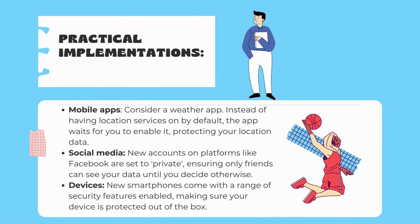Practical implementations: for example, a mobile app might implement privacy by default by setting location tracking to off, requiring users to actively turn it on if they wish to use that feature. A social media platform implements privacy by default by setting users' profiles to private by default, so that only approved connections can see their posts and personal information. Users have to actively change their privacy settings to make their profiles public.